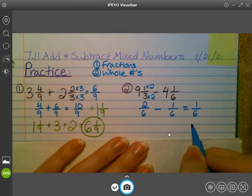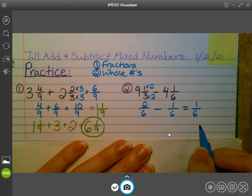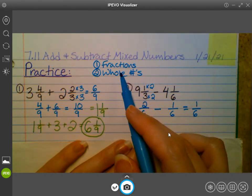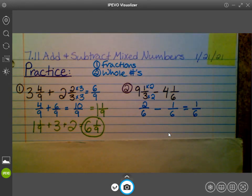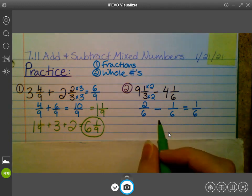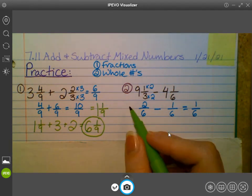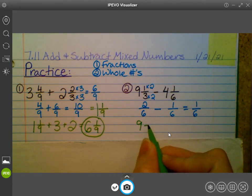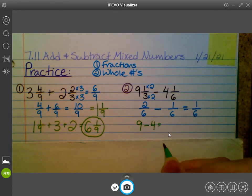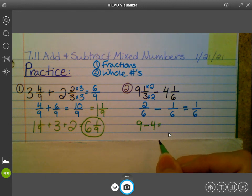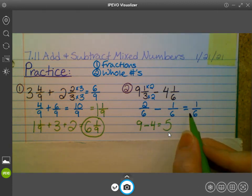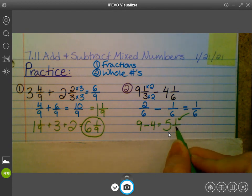Now, am I done? Is that it? No. What do I still need to do? 9 minus 6. Show me on your hand. What is 9 minus 4? Show me on your hand. My 9 minus 4 is 5. And then I bring my 1 6th over for 5 and 1 6th.